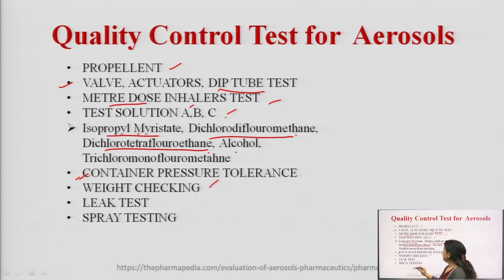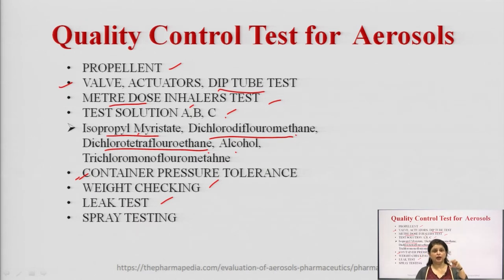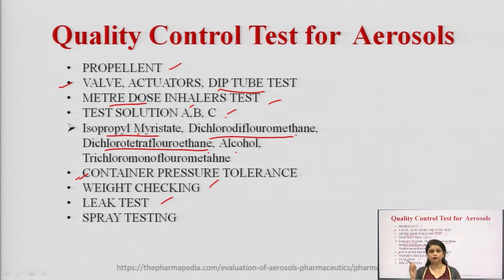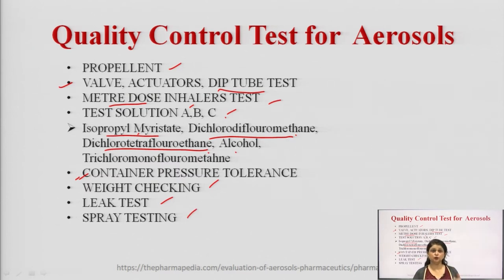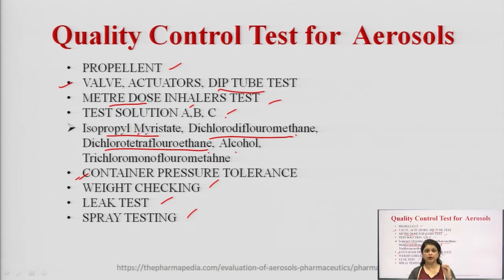Weight checking and leakage tests need to be performed. For the leakage test, we can use acid dyes — we place the container into a dye solution, and if the dye moves into the container it means there is leakage somewhere. When you open the valve system you will observe droplets of dye inside the container. The spray test must also be performed to verify whether the valve system is properly generating a foam or mist.